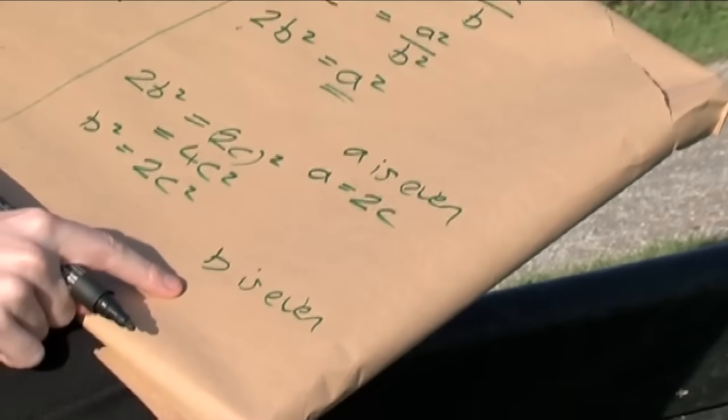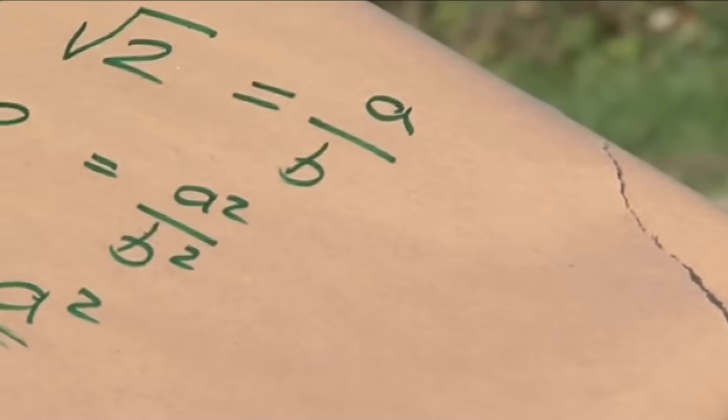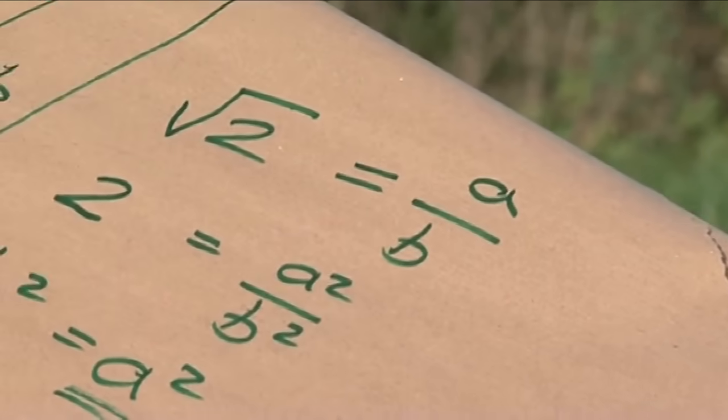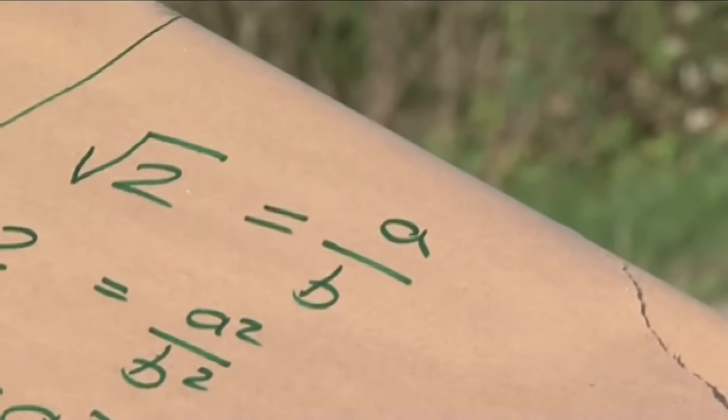b is even. What I've shown is a is even and b is even. That's a problem. They can't both be even. Like my example of 2 divided by 4. It's not in its smallest possible terms if they're both even.